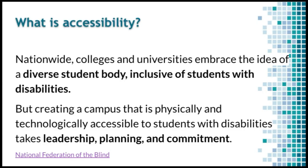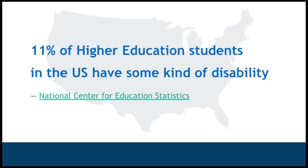So what is accessibility? Pretty much colleges and universities nationwide embrace the idea of a diverse student body — they want students to be accepted whether they have disabilities or not. However, creating a college campus that's physically and technologically accessible is quite a challenge. A statistic we want to share is that 11% of higher education students in the U.S. have some kind of disability, from the National Center for Education Statistics.